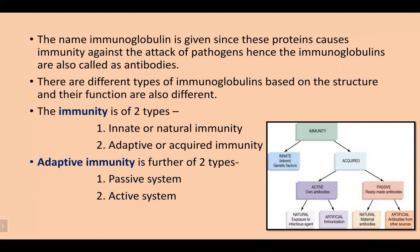Hence, the immunoglobulins are also called antibodies. If someone has an antigen-body attack, the body will produce antibodies. These antibodies are called immunoglobulins. There are different types of immunoglobulins based on their structure, and their functions are also different.